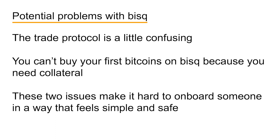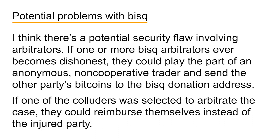The complexity of the BISC protocol and the collateral issue make it hard to onboard someone to BISC. I am also a little wary of arbitrators because I think that some degree of trust is placed in them, and I suspect that in the future some arbitrators may abuse this trust. BISC trades can be done basically anonymously, and I suspect that one or more BISC arbitrators in the future could become dishonest and collude together to play the part of an anonymous buyer or seller. If they did that, they could open a dispute and send the other party's bitcoins to the BISC donation address, and a dishonest arbitrator selected to arbitrate the case could reimburse themselves instead of the injured party. Finding some way to address this would be a good thing to do, otherwise it could cause a serious trust problem in the future.